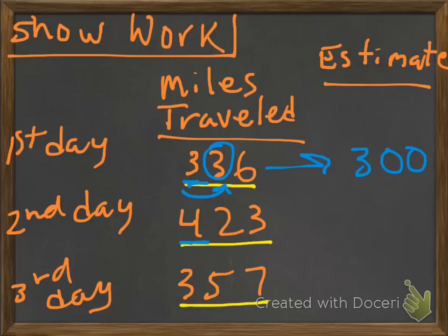For day 2, we're rounding to the hundreds place, we're going to look at the tens place, and it's a 2. And the 2 means we're going to, again, round down. So, we're going to go to 400.